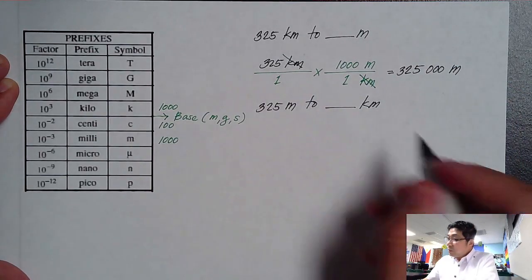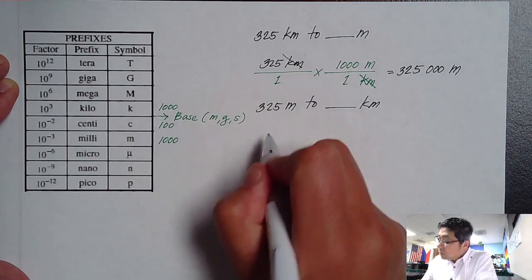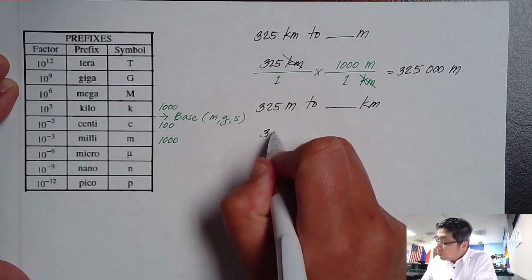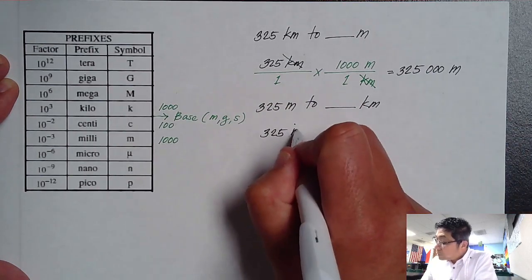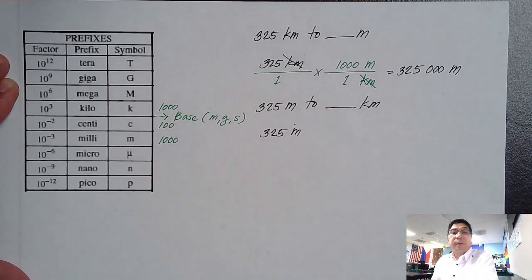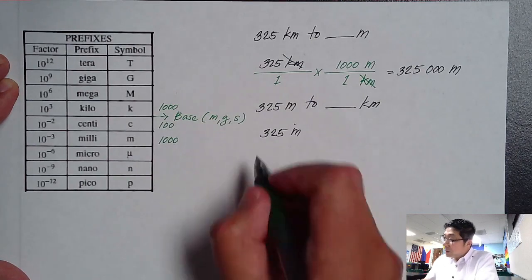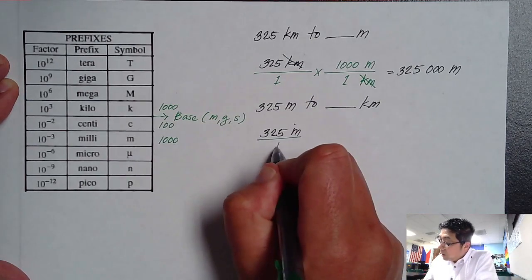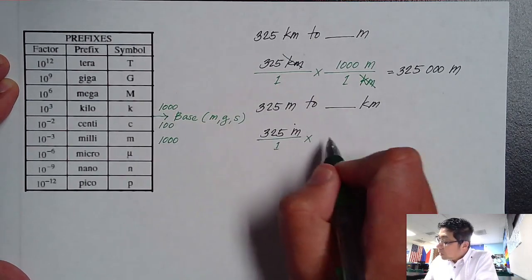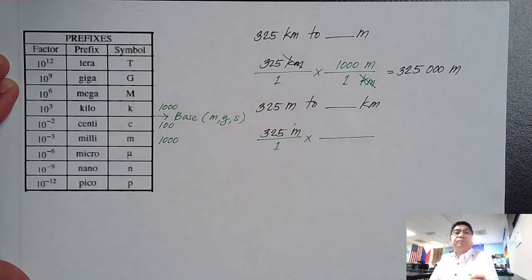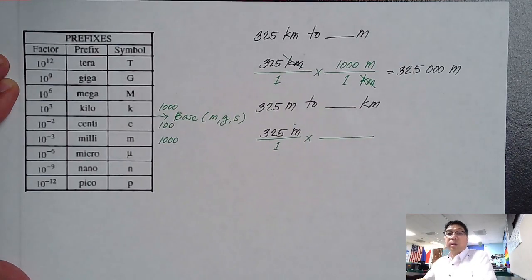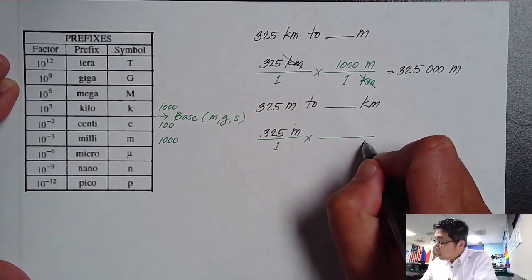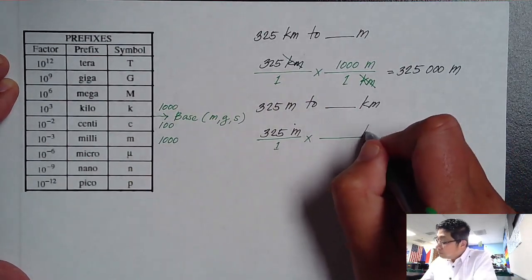Still the same process, which is to copy our unit, or the given information, which is 325 meters. We're solving for the second one. And it is again divided by 1, and then let's multiply it by the bar. So this time, we want to cancel meters. So meters should be at the bottom of our bar over here, and kilometers should be on the top.